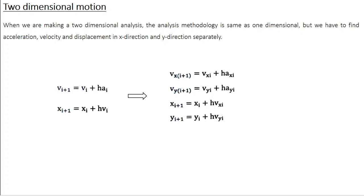If you recollect the Euler's formula, the new value of velocity v_i+1 equal to old value of velocity v_i plus step size h into the old value of acceleration a_i and the new value of position x_i+1 equal to old value of position x_i plus step size h into old value of velocity v_i. Now, I am going to write this equation explicitly for x and y direction.